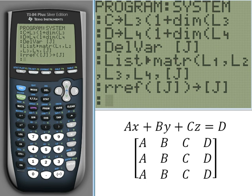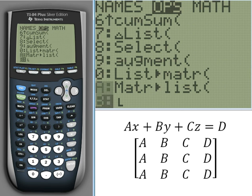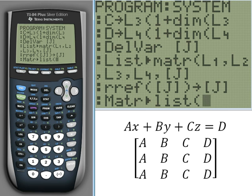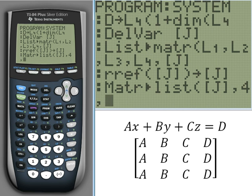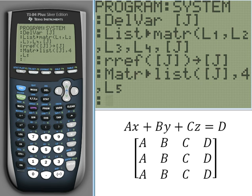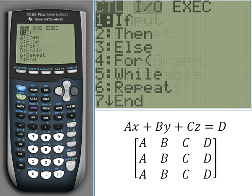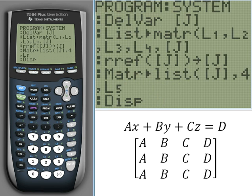And now we want to get our answer out of that and put it back into a list. Go back to second stat, down at the bottom, and we can go matrix to list in the other direction. Our first argument is going to be the matrix, so put in matrix J. Our next argument is going to be the column that we want to extract, which is the fourth column. And then the last one is going to be our destination list, which is going to be our last list that we cleared, list 5. Go ahead and put that there.